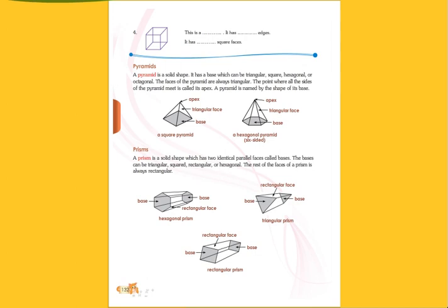Pyramids. A pyramid is a solid shape. It is also a solid shape, so it has a base which can be triangular, square, hexagonal, or octagonal, okay?